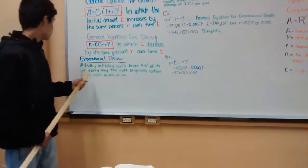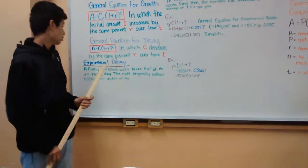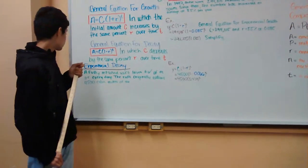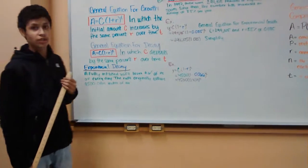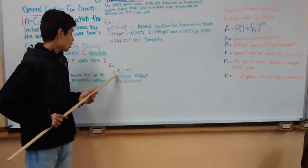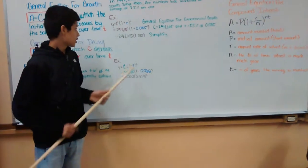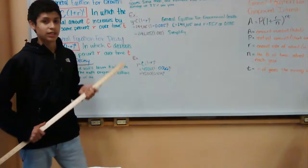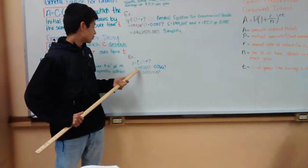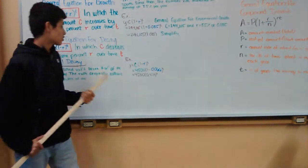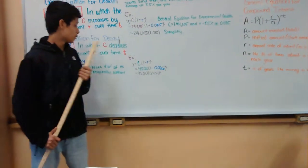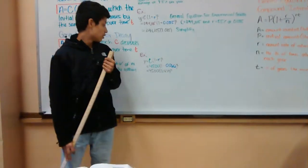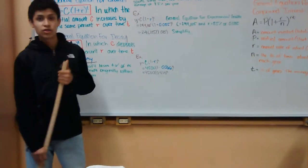An exponential decay example would be: a fully inflated raft loses 6.6 percent of its air every day. The raft originally contains 4500 cubic inches of air. The example is y equals C times one minus r to the power of t. This is also the general equation for exponential decay. So we have 4500 times one minus 0.066 to the power of t. To simplify it, it would be 4500 times 0.934 to the power of t.